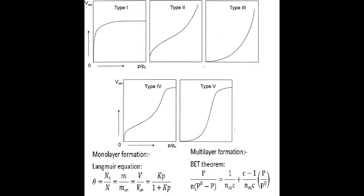There are five main types but the scope of this video is to look at only the last three. The graphs are plots of adsorption against pressure. Monolayer formations are modeled by the Langmuir equation and the multiple layer formations by the BET theorem.